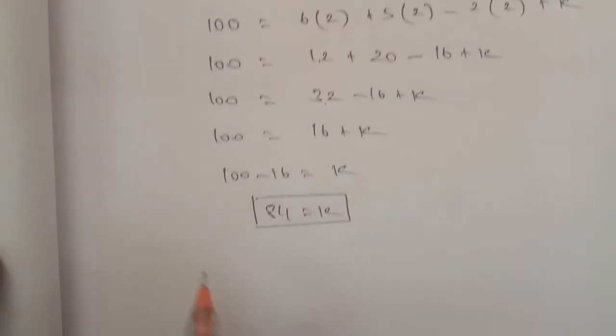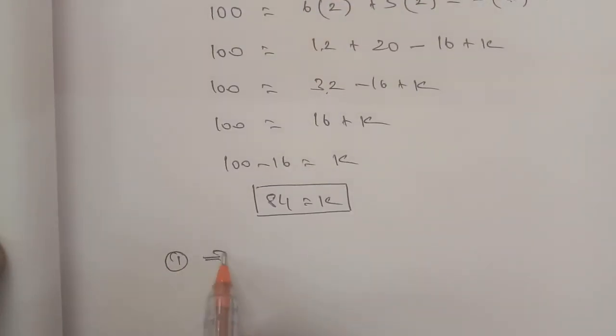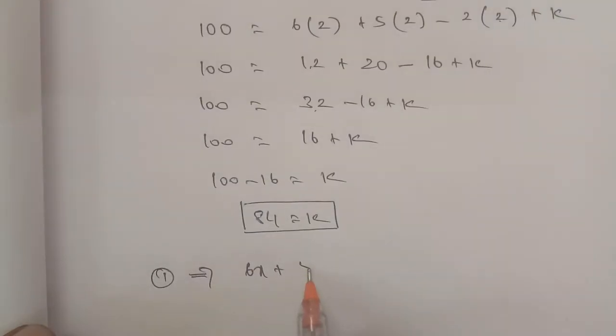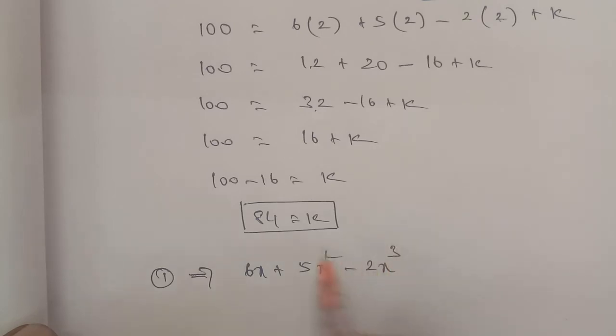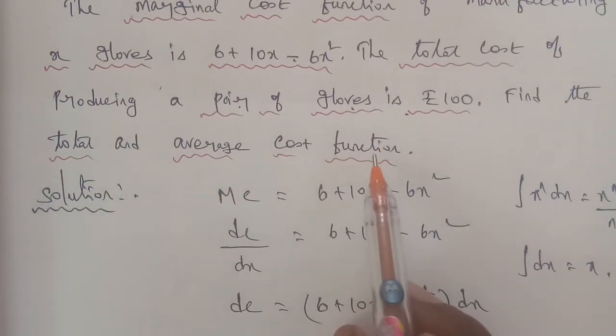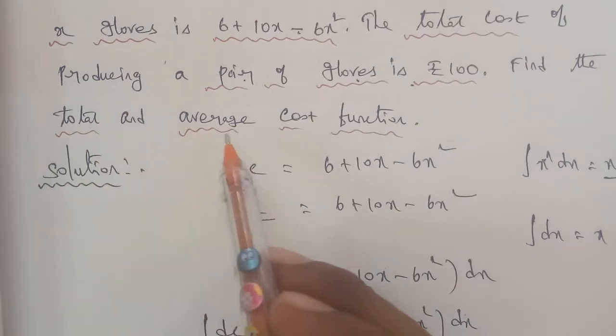Substituting k equals 84 back into the equation, the total cost function is C equals 6x plus 5x square minus 2x cube plus 84. Now we need to find the total cost function and the average cost function.